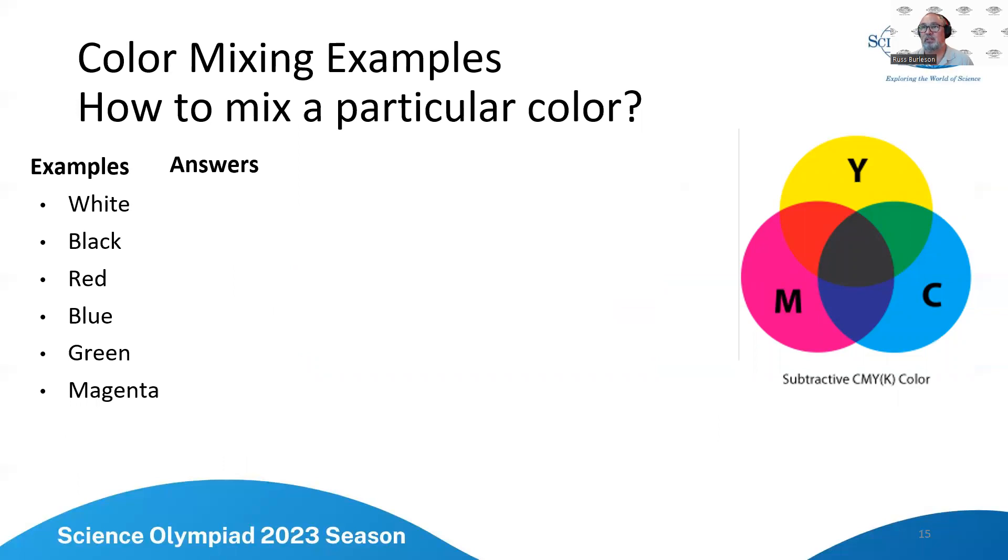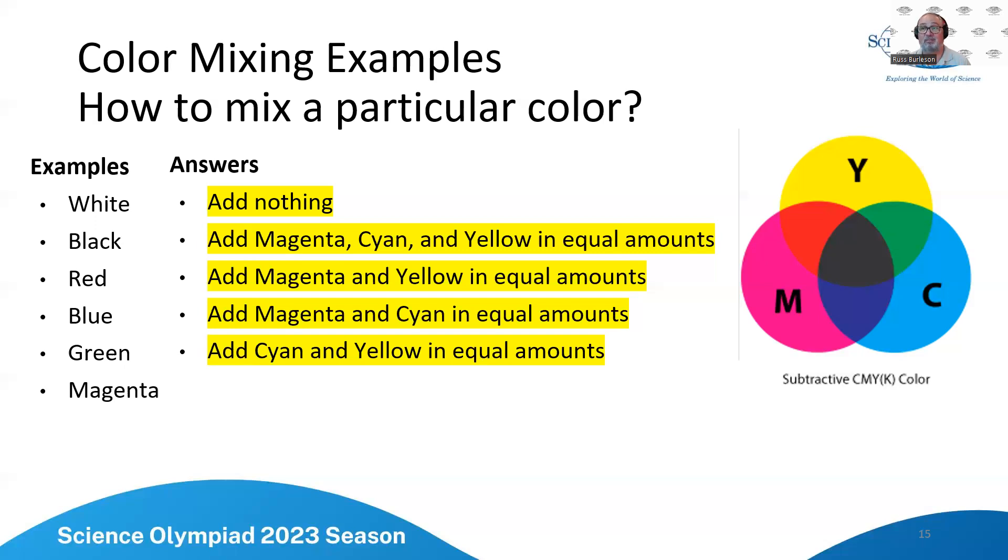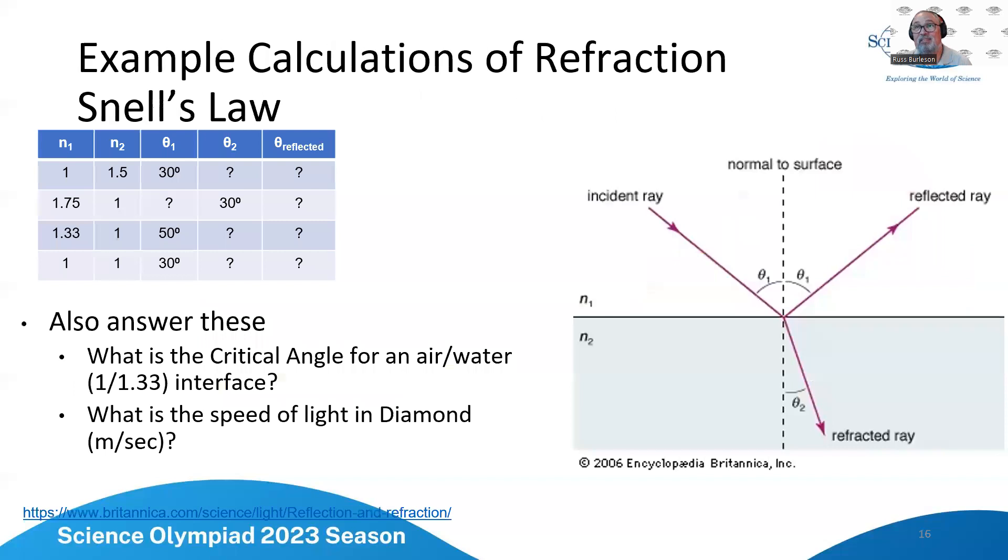So now let's talk about color mixing examples. How to mix a particular color. So if I wanted to mix white, how do I mix that? I add nothing and that's because all your additive colors usually start with a base of white. You'll notice that if you ever go to the paint aisle. I want to make black, I'll add magenta, cyan, and yellow in equal amounts. And that makes sense from the color wheel. If I want to have red, I'll add magenta and yellow in equal amounts. I want to have blue, I'll have magenta and cyan in equal amounts. If I want to have green, I'll add cyan and yellow. And if I want to have magenta, I just add magenta.